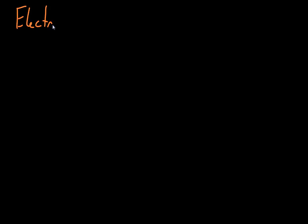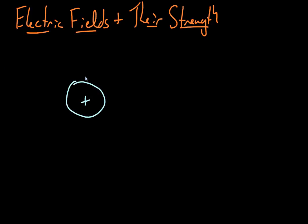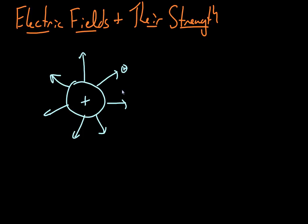Let's talk about electric fields and their strength. We have looked at testing electric fields with a positive test charge — they are always tested with a positive test charge. Therefore you get field lines emanating out of positive charges and into negative charges, and you can construct all of the interesting interactions of different positive and negative charge spaces just by imagining what would happen if you placed a positive test charge in there.